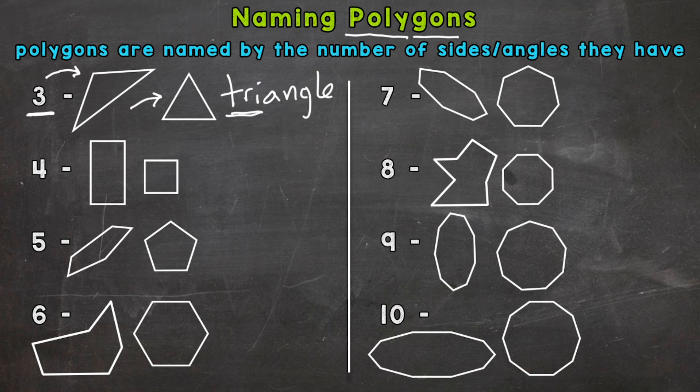Let's go to four. You may want to call this a rectangle and this a square, and that's true—that is a rectangle and that is a square—but those are specific quadrilaterals. Quadrilateral includes every polygon with four sides.